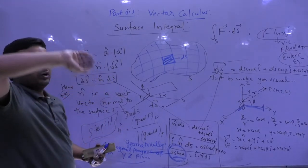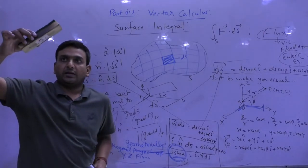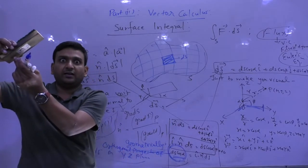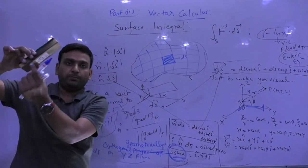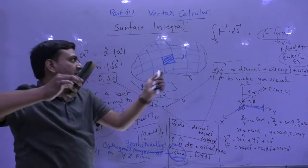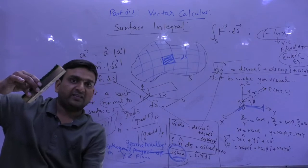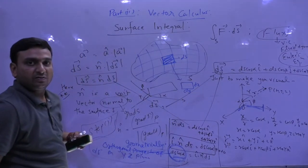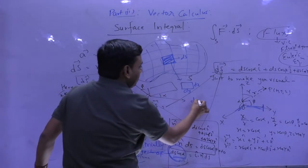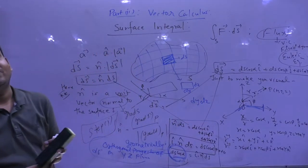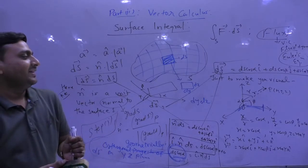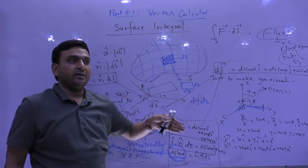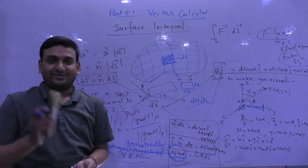For a small rectangular element on the surface, its projection onto the yz plane is a rectangle with area dy·dz. So ds cos α can be replaced by dy dz; ds cos β can be replaced by dx dz; ds cos γ can be replaced by dx dy.